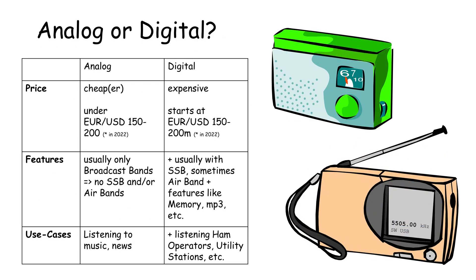The next one is a bit tricky: analog or digital. Generally speaking, as long as you only want to listen to broadcast stations like music and news, an analog receiver will work perfectly for you. Of course, without a digital display, you will never know exactly which frequency you are on. If you also want to listen to radio amateurs, utility stations, or number stations, you need a digital receiver with single sideband mode.